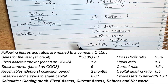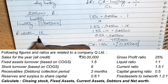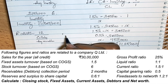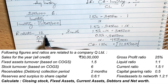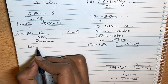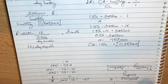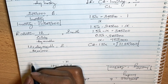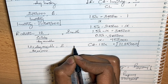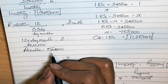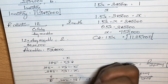To calculate receivables, we use: average receivables equals credit sales into collection period divided by 12. Credit sales equals 30,00,000, collection period is 2 months. So average receivables equals 30,00,000 multiplied by 2 divided by 12, which gives debtors equals 5,00,000.